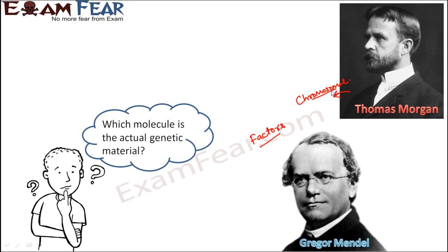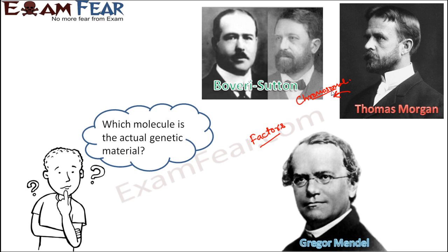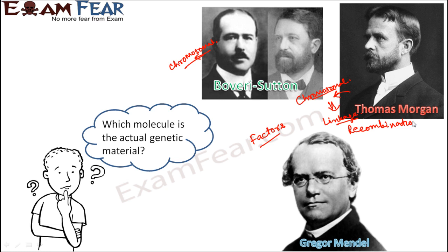Morgan said that something in the chromosome gets carried from one generation to the next. Scientists like Boveri and Sutton also gave the chromosomal theory of inheritance. Morgan further spoke about concepts like linkage and recombinations. So all that was known was that the genetic material is somewhere inside the nucleus of the cell, inside the chromosomes — but which molecule in the chromosome, that was not sure.